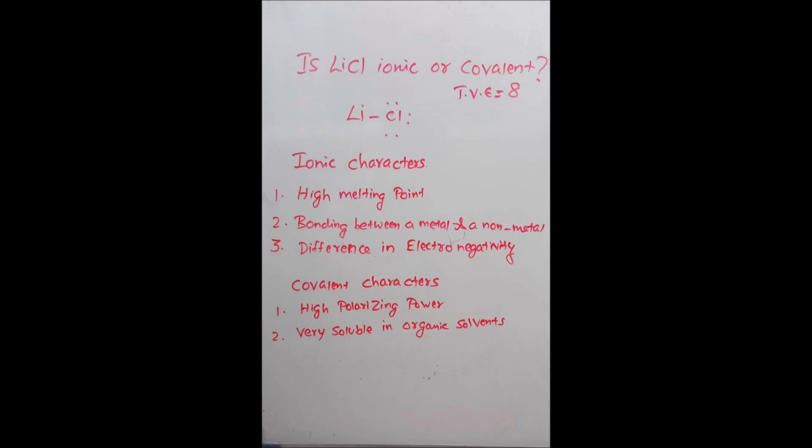Like all other alkali metal chlorides, its melting point is high — over 600 degrees Celsius. Also, in lithium chloride, the bond is formed between lithium, a metal, and chlorine, a non-metal. Also, the electronegativity difference between the two atoms, lithium and chlorine, is fairly high. So these are the ionic characters of lithium chloride.